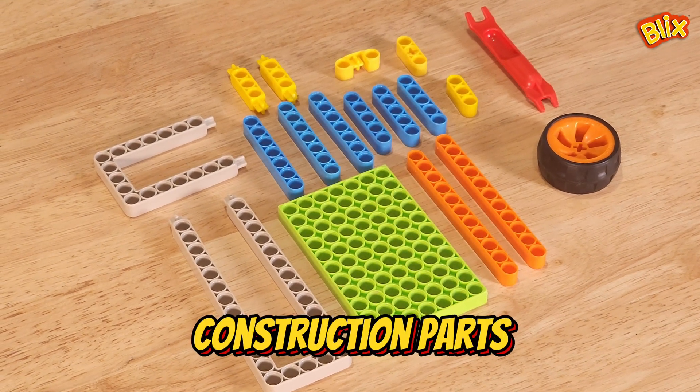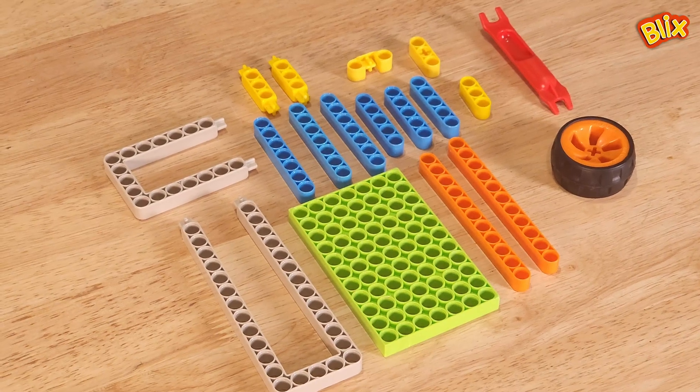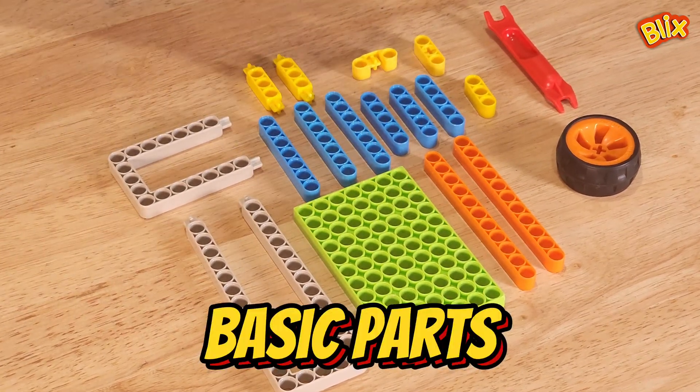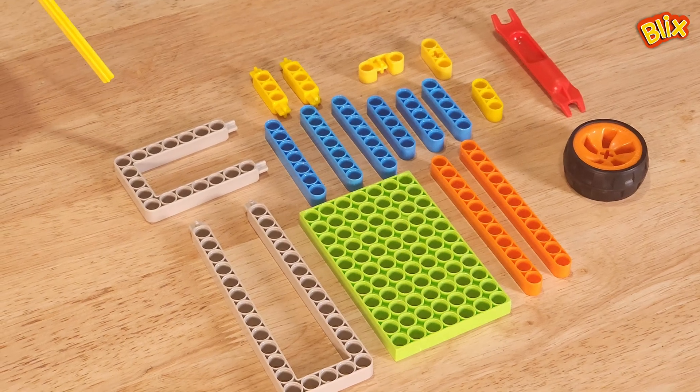Now let's see the different construction parts of Blix. We can divide the whole construction system into four different parts. These are basic parts or pillars that we can use to build structures.